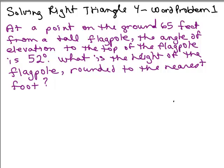We're going to solve this word problem using the techniques we use to solve right triangles. At a point on the ground 65 feet from a tall flagpole, the angle of elevation to the top of the flagpole is 52 degrees. What is the height of the flagpole rounded to the nearest foot?